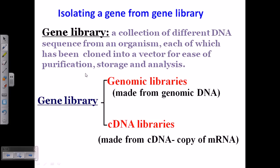A gene library is a collection of different DNA sequences from an organism, each of which has been cloned into a vector for ease of purification. You simply take out the cell of interest and amplify it via PCR. However, making these libraries — particularly capturing all the small mRNA segments for cDNA libraries — is very tedious.